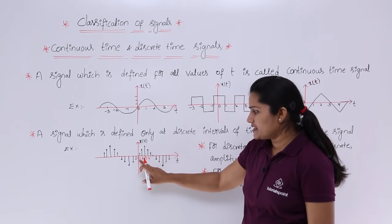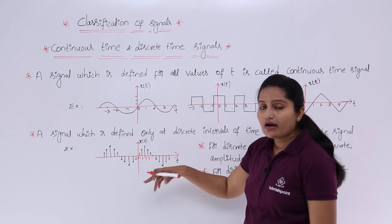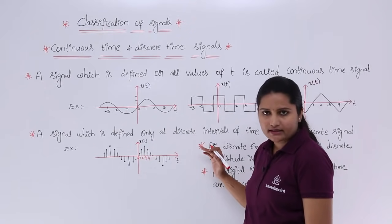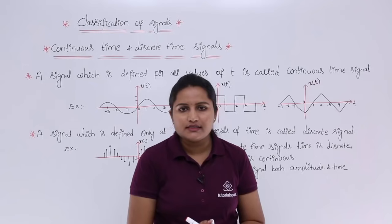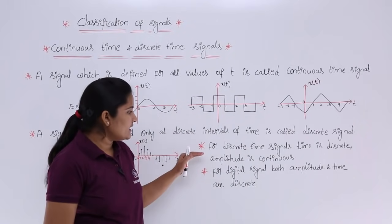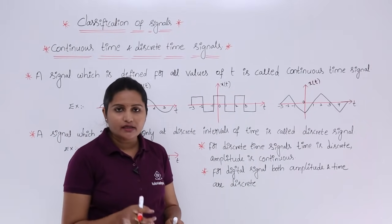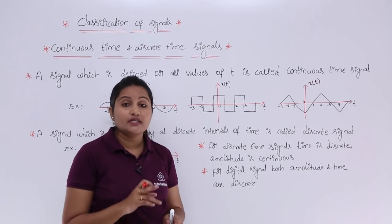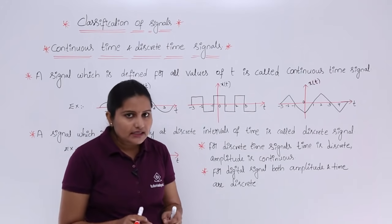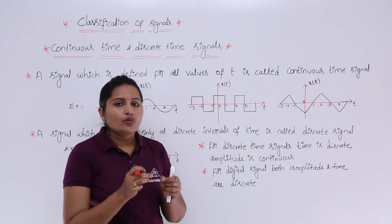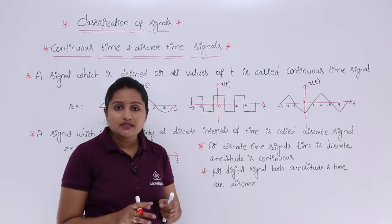For example, the sample at 1 may have 1 volt, sample at 2 may have 2 volts, and so on. One important point about discrete time signals: time is discrete, but amplitude is always continuous. Please keep in mind — for discrete signals, only time is discrete, but amplitude is continuous.